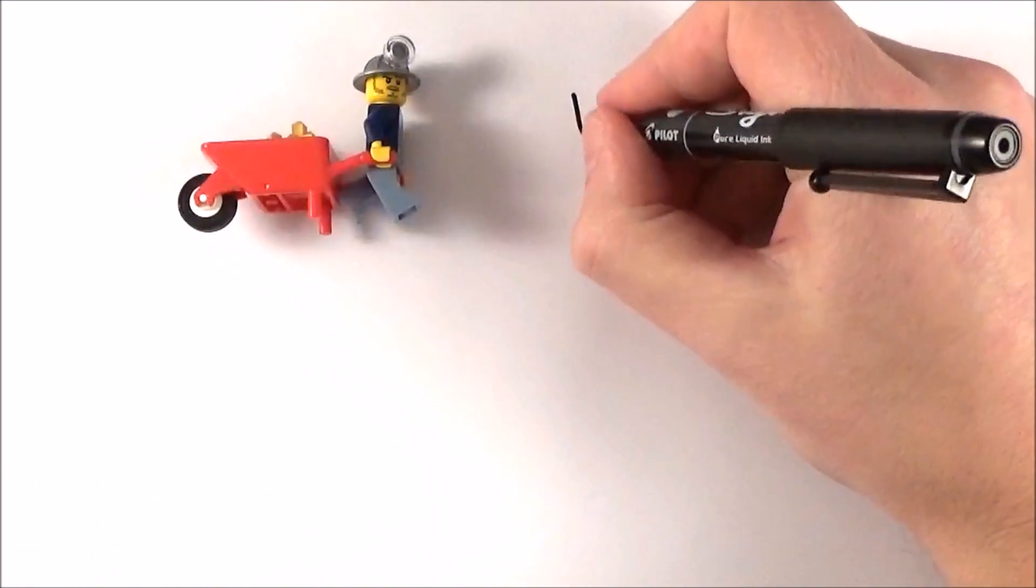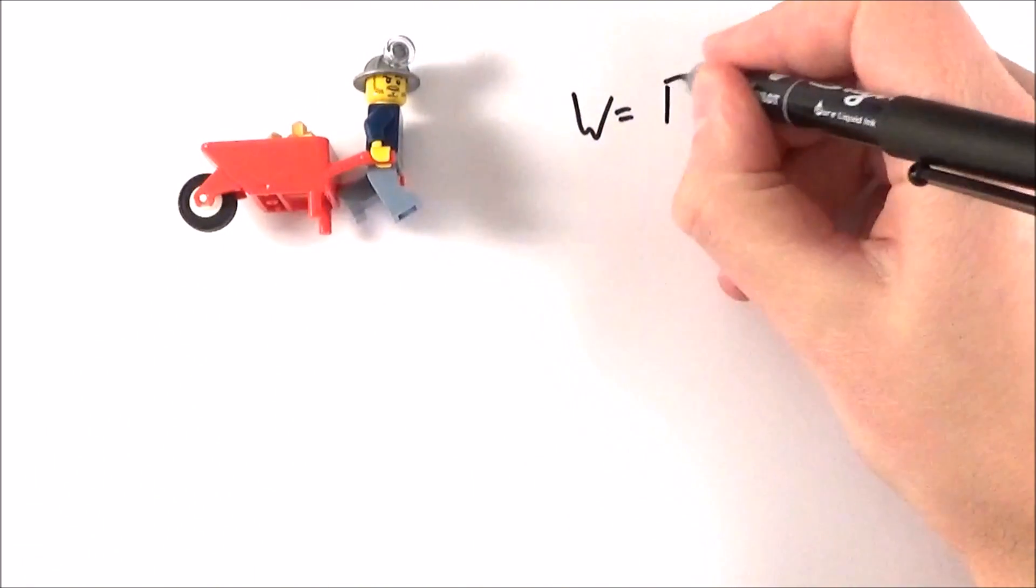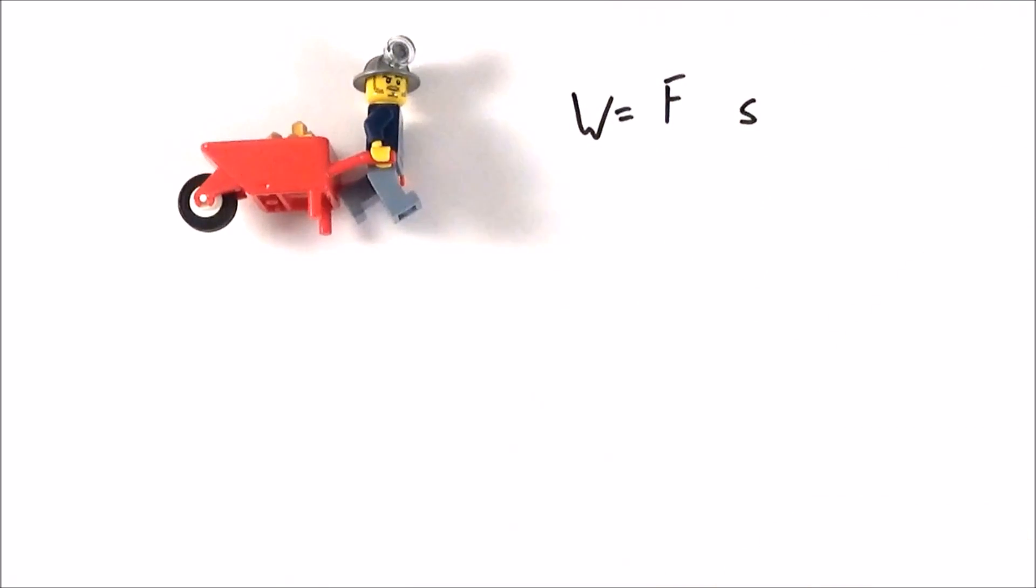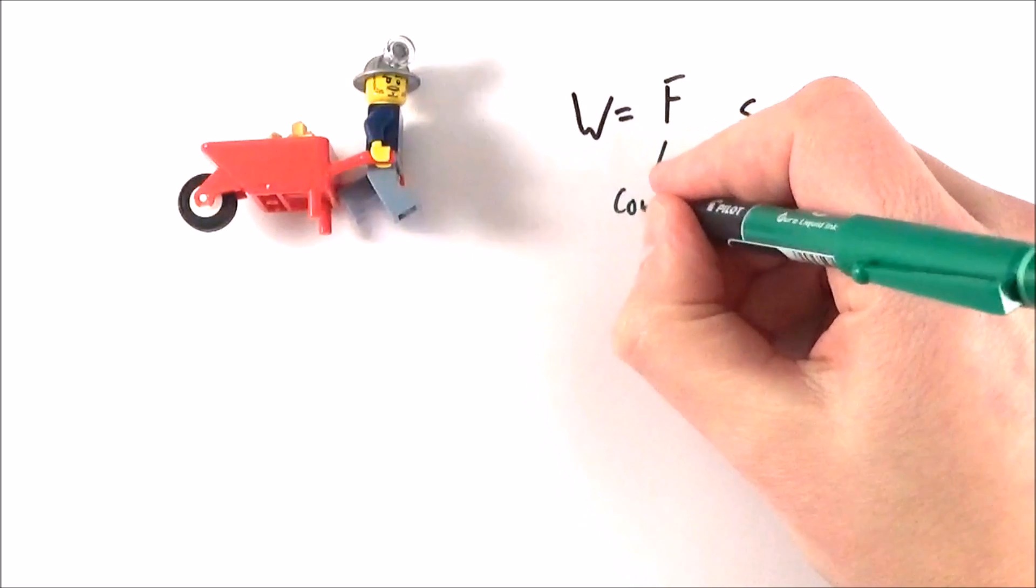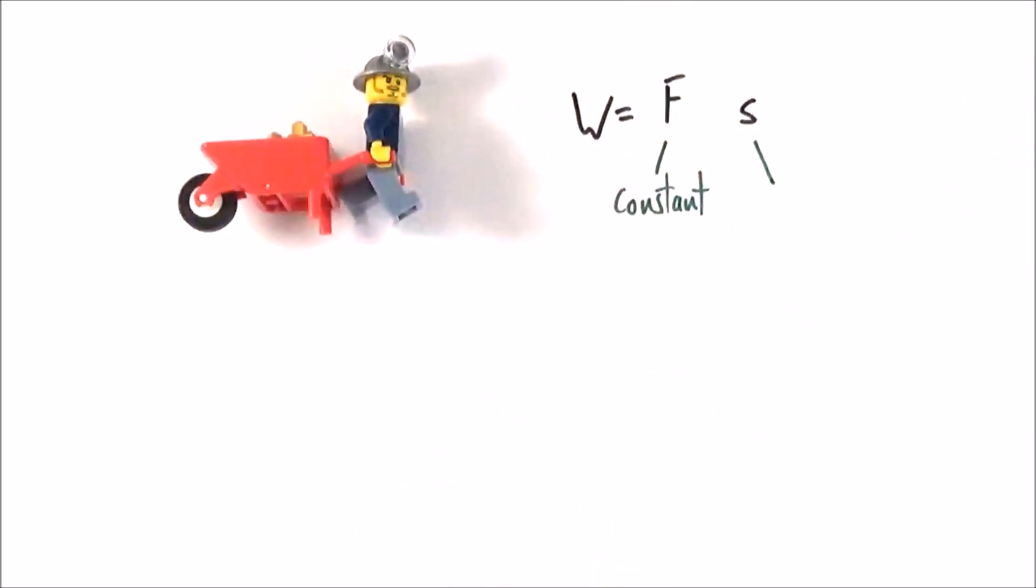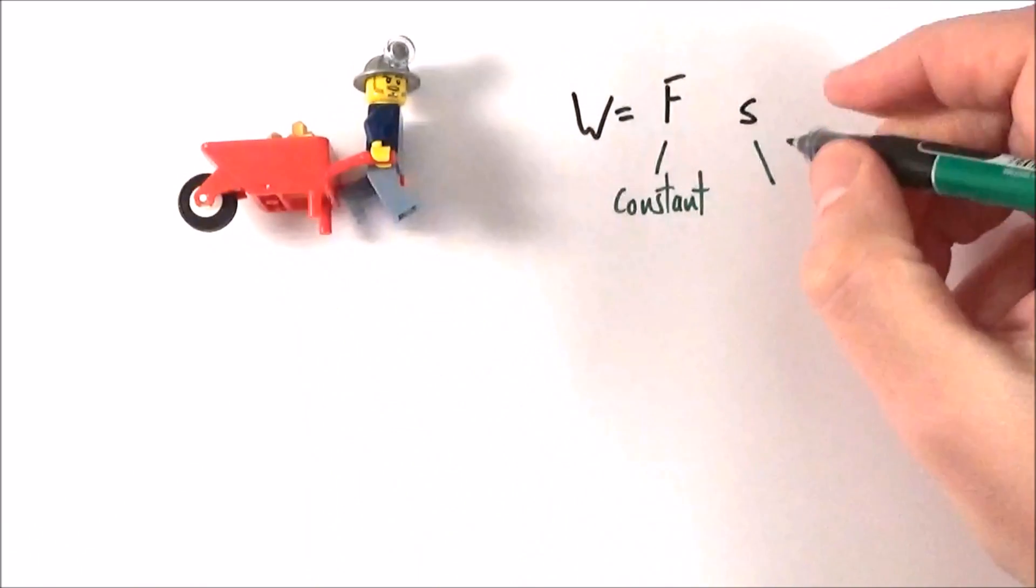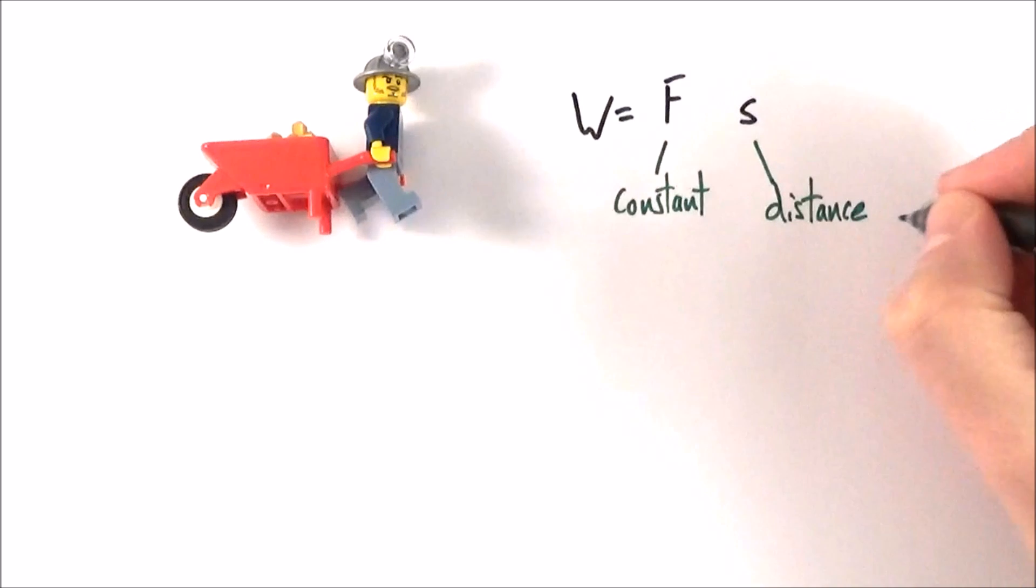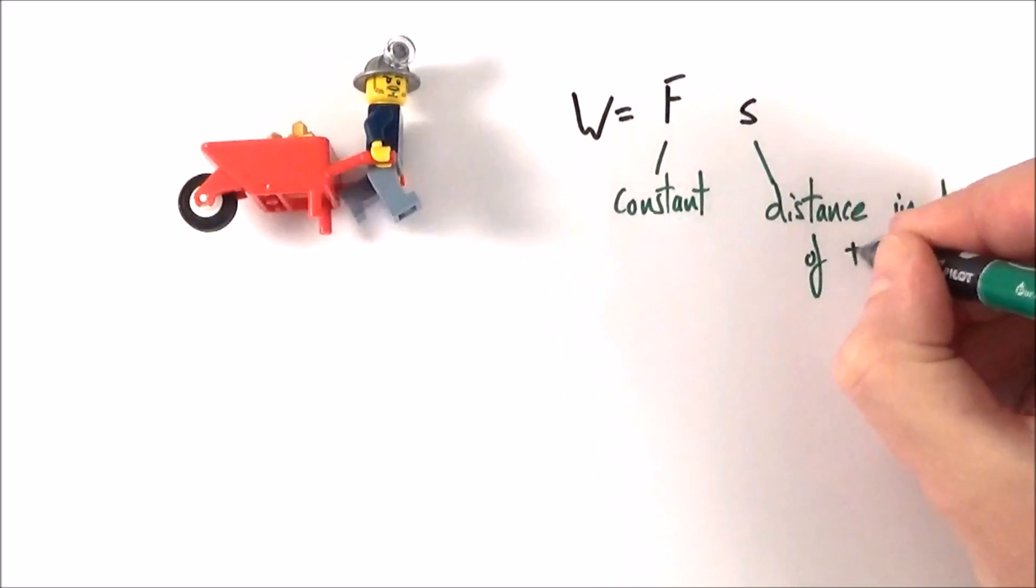To calculate the work done on an object, we need to know the force applied and also the distance that it's moved. But the important thing here is that we're talking about a constant force that has been in the direction of the distance it's moved. So this S is really the displacement, so it's a distance in the direction of the force.